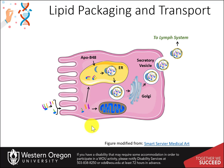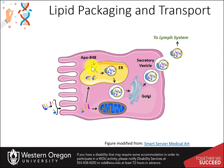Within enterocytes, free fatty acids and monoacylglycerides can travel to the endoplasmic reticulum, where they can be reassembled into triacylglycerides. Dietary cholesterol is similarly converted to cholesterol esters. In the ER, they are packaged into chylomicron structures, which consist of a single phospholipid monolayer, cholesterol, and proteins known as apolipoproteins. One of the main apolipoproteins incorporated into chylomicrons is called ApoB48. TAGs and cholesterol esters are carried inside the chylomicron.